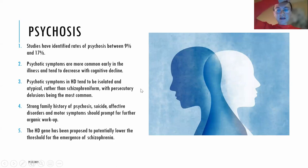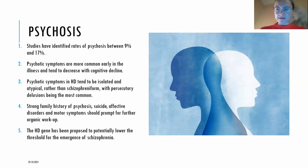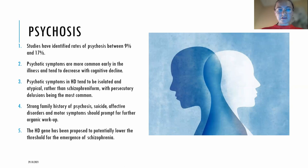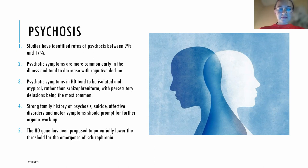Psychosis is also an important aspect, with studies showing a rate between 9% to 17%. Interestingly, psychotic symptoms are more common early in the illness and tend to decrease with cognitive decline. Psychotic symptoms in HD tend to be isolated and atypical rather than schizophreniform, with persecutory delusions being the most common. Risk factors include strong family history of psychosis, affective disorders, and motor symptoms. The HD gene has been proposed to potentially lower the threshold for the emergence of schizophrenia.